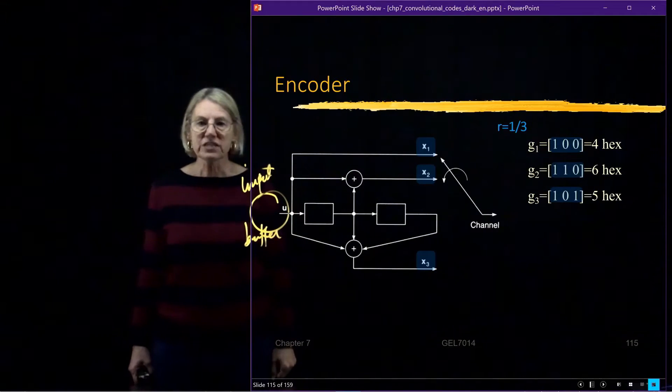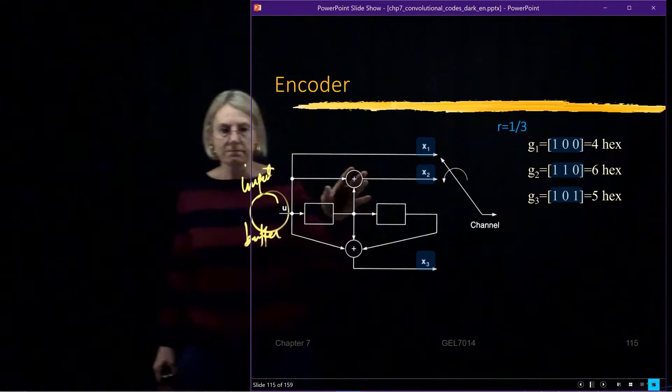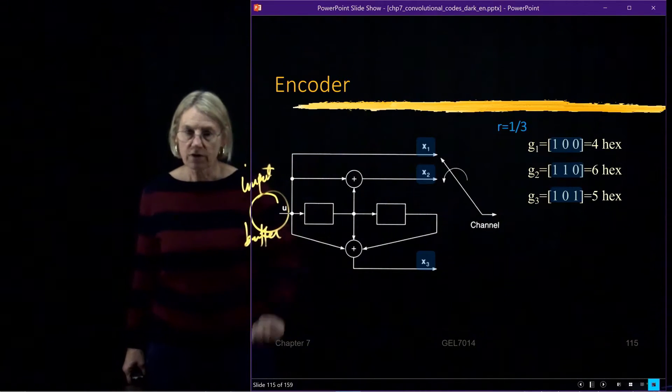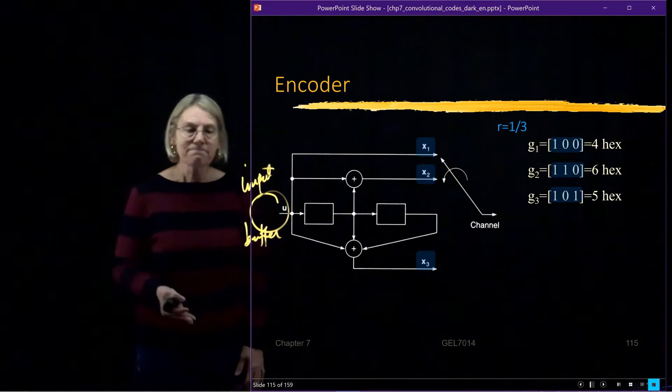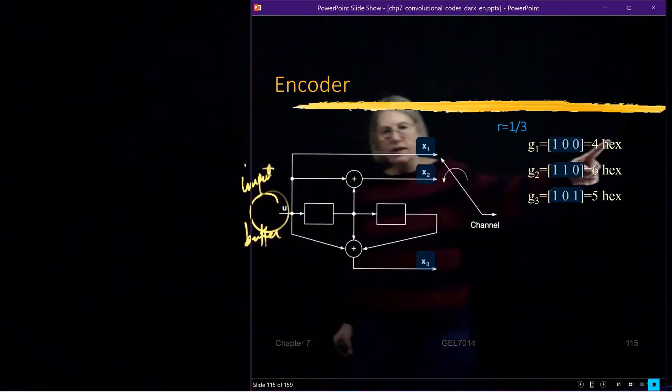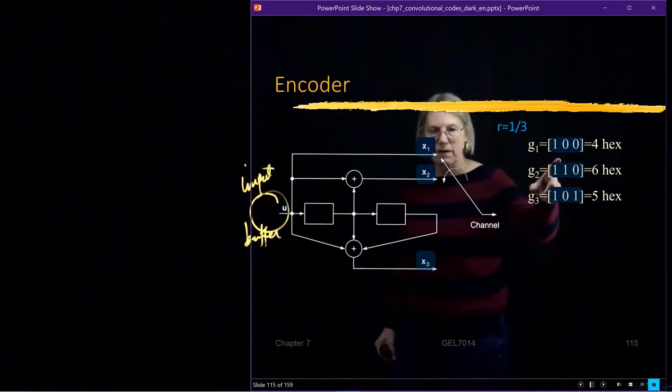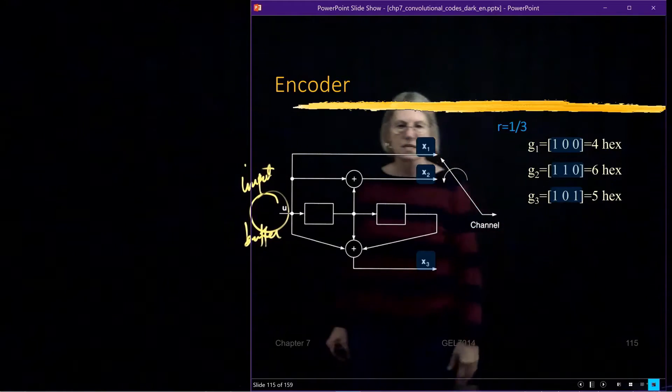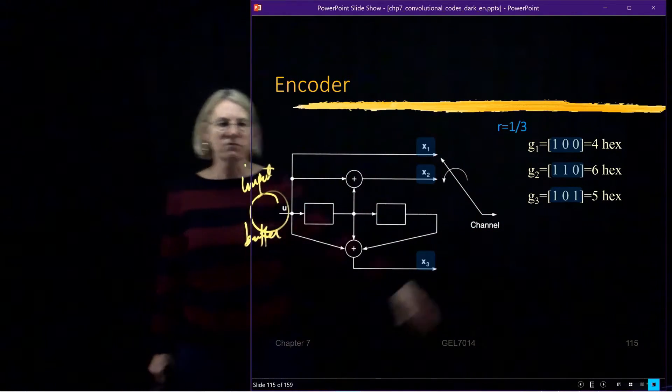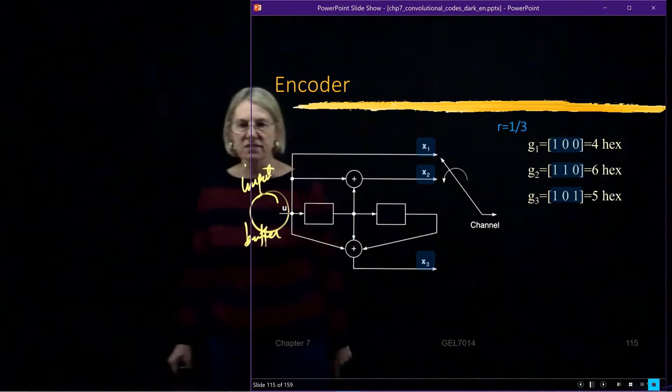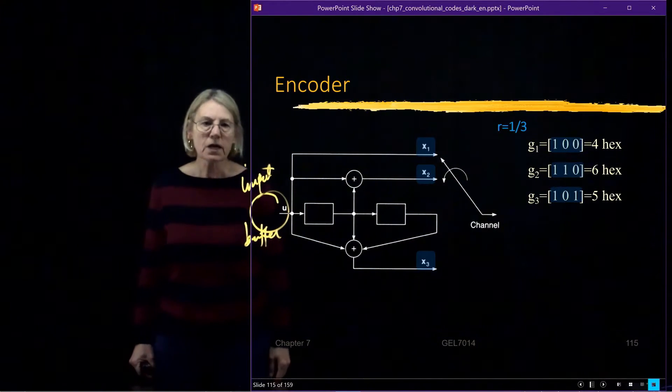And in the first case, we have here the vectors that represent the interconnections for the registers to generate the codes. I notice also here the list of hexadecimal representation for this binary number, which is another way you can sometimes see codes listed in a table of codes. They might give you the vector or they might just give you the hex representation.